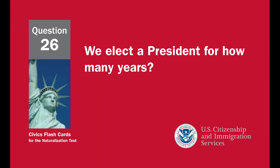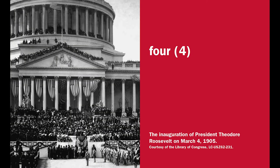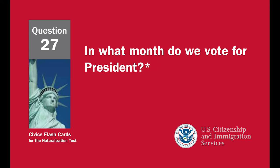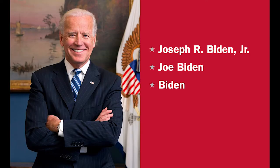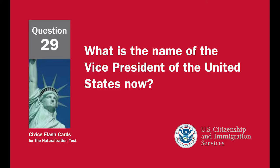We elect a president for how many years? Four. In what month do we vote for president? November. What is the name of the president of the United States now? Joseph Biden, Joe Biden. What is the name of the vice president of the United States now? Kamala Harris.